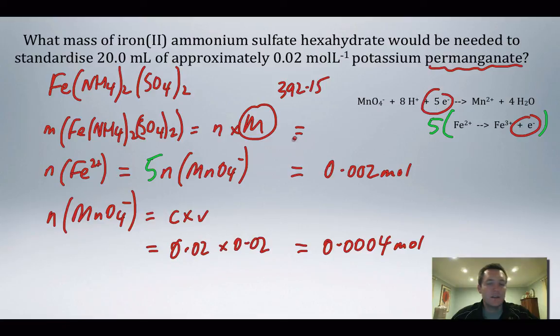That's how many grams of iron(II) ammonium sulfate I have to use in order to react exactly with 20 milliliters of 0.02 mole per liter of that potassium permanganate.